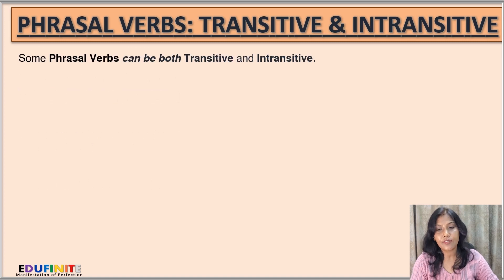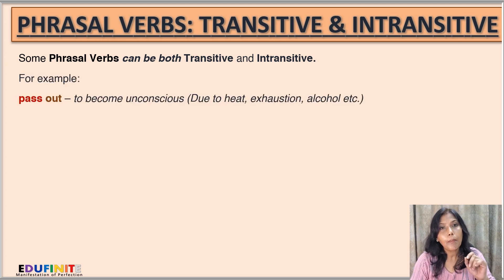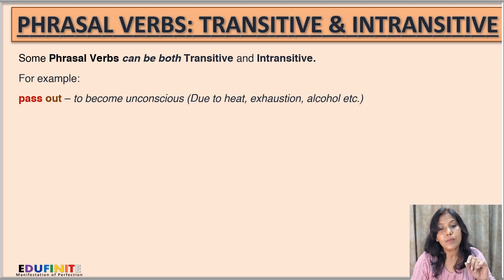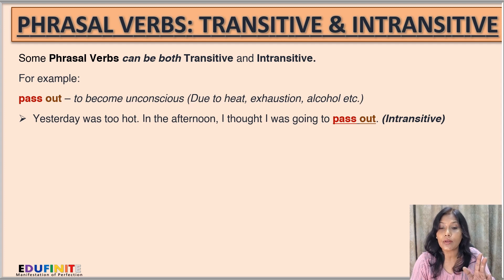The phrasal verb can be both transitive and intransitive at the same time. For example, pass out. The first meaning is to become unconscious due to heat, exhaustion, alcohol, etc. For example: Yesterday was too hot. In the afternoon, I thought I was going to pass out. Here, the phrasal verb pass out is intransitive — it does not have any direct object; it is only talking about the subject, that is, I.